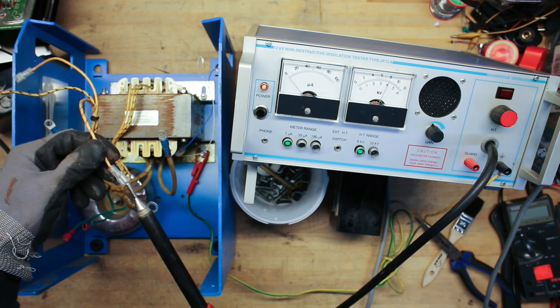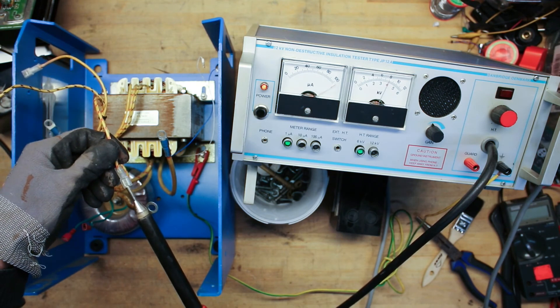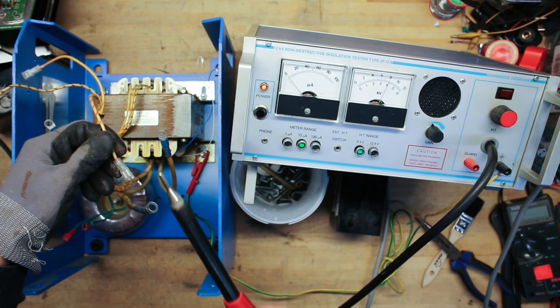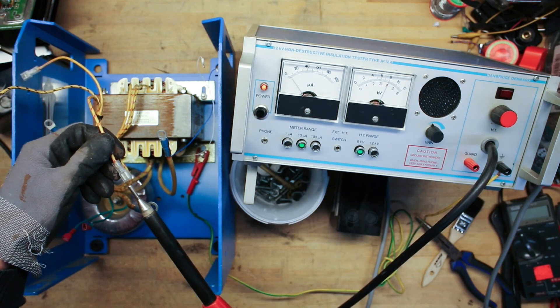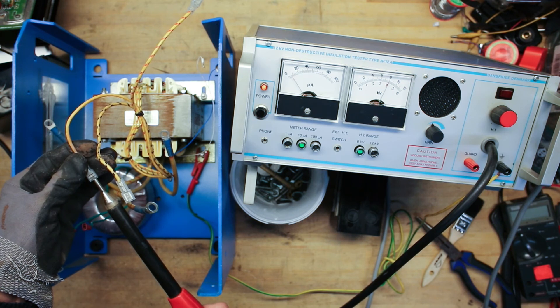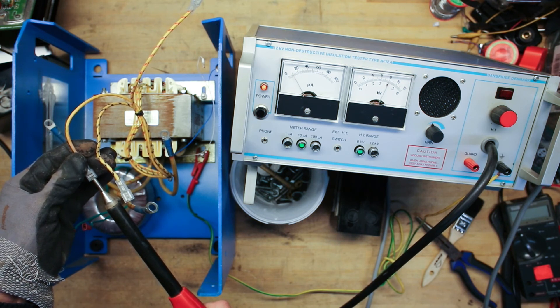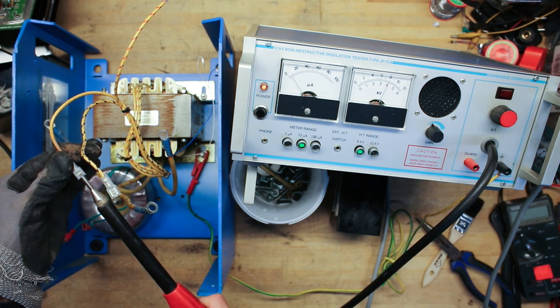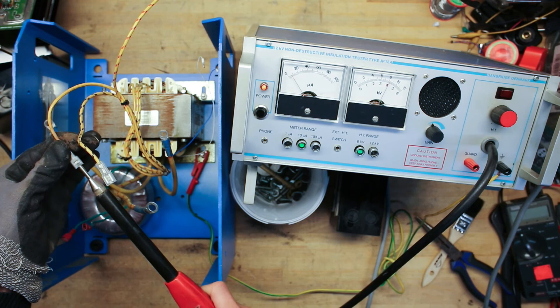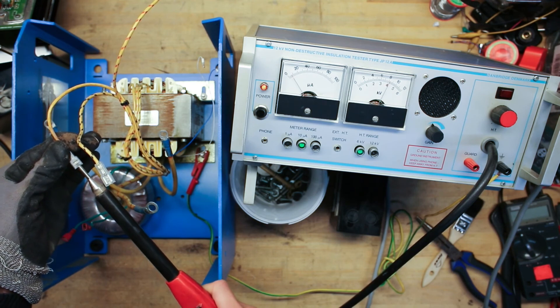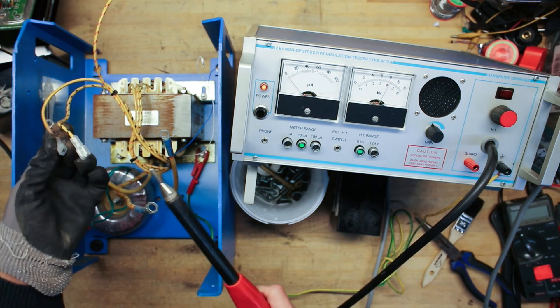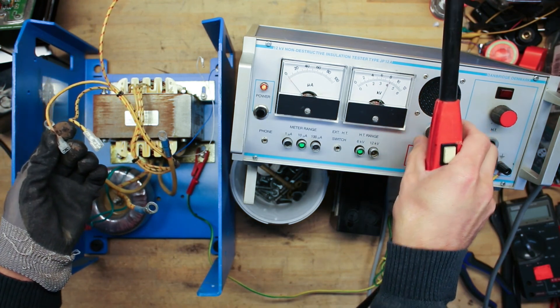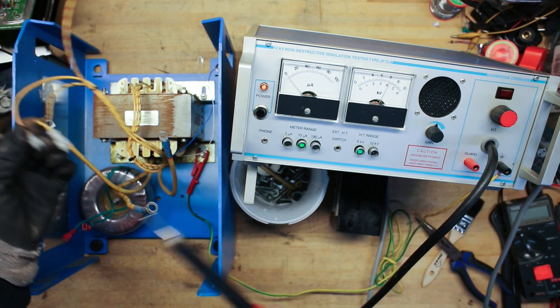So let's try the primary side. That looks bad right away. Even without the high voltage. Let's try higher scale. See that sounds bad. The clicking noises we can hear is actually flash overs to ground. So I think we have a defective insulation inside this transformer.